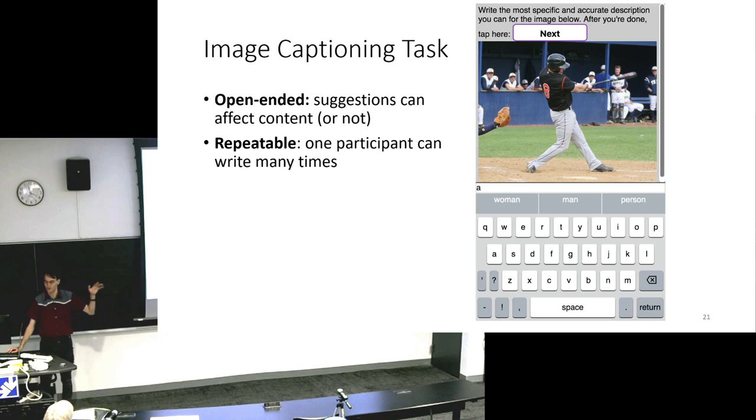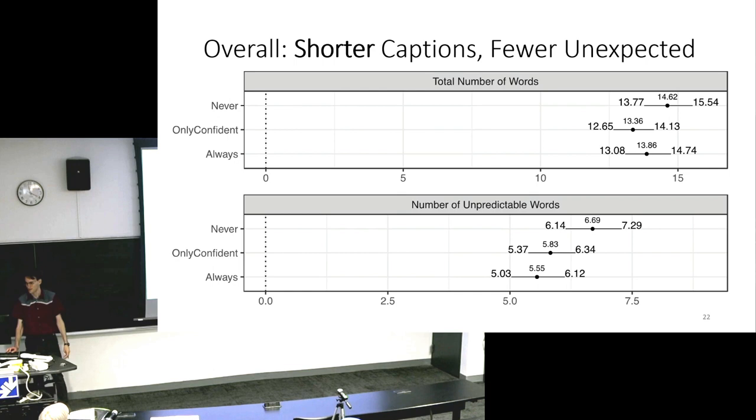And I just turned the suggestions on or off. So participants did this a bunch of times, sometimes with suggestions, sometimes with suggestions that were sometimes on, sometimes with no suggestions. And overall, we saw that people writing with the suggestions wrote captions that were shorter and had fewer unexpected words. So it was just less informative. And we think the interpretation of what was going on here is that instead of thinking about what would be helpful to say, you see a prediction of a word in front of you and you just say, oh, that's good enough, tap.